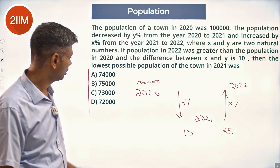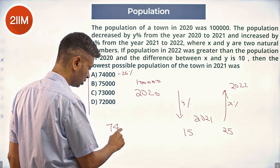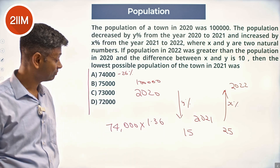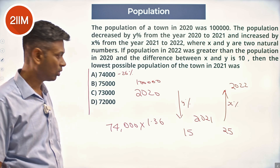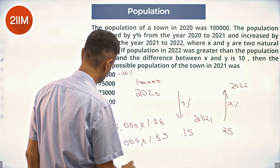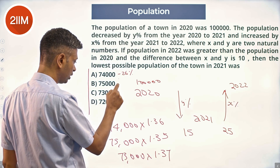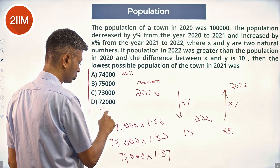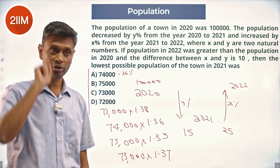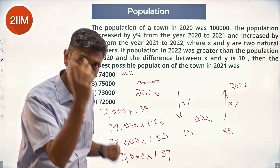We take the population in 2021: if it's 74,000 then it's down 26 percent, so we do 74,000 into 1.36 and see if that's greater than 100,000. Or we take 75,000 into 1.35, or 73,000 into 1.37 — down 27 — or 72,000 into 1.38. The number should be more than 100,000 and as close to 100,000 as possible.